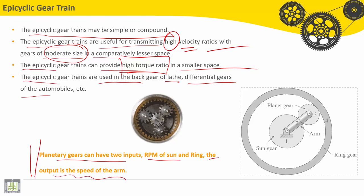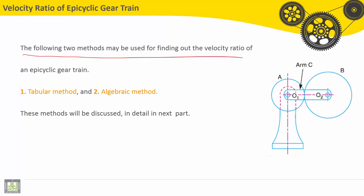The following two methods may be used for finding out the velocity ratio of an epicyclic gear train: the tabular method and the algebraic method. These two methods will be discussed in the next part.